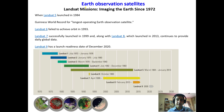Then we have earth observation satellites. Globally, the first mission carried out in the series of earth observation satellites was the Landsat missions by the USA in 1972. Landsat-1 launched in July 1972 and lasted till January 1978. This was followed by Landsat-2, Landsat-3, Landsat-4, Landsat-5, 6, 7, and 8.